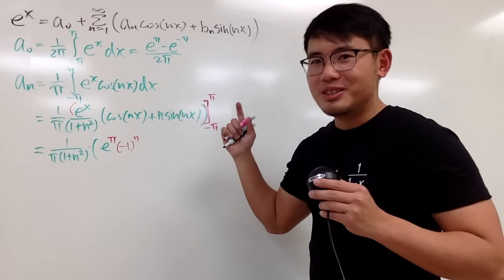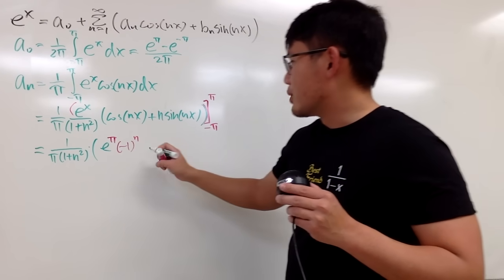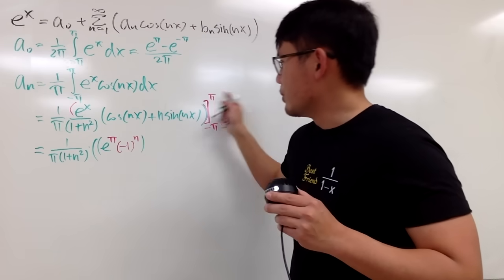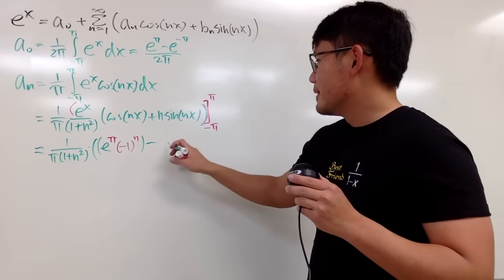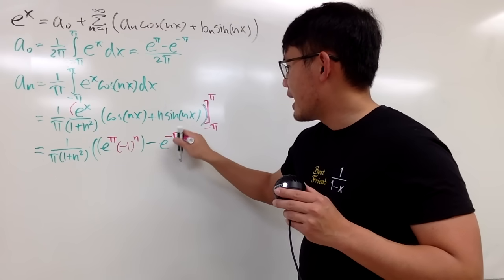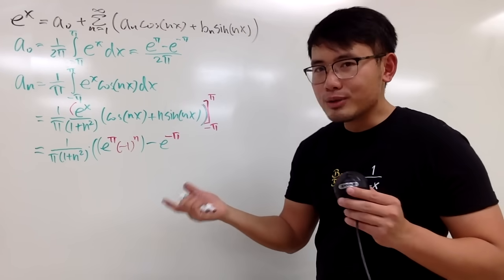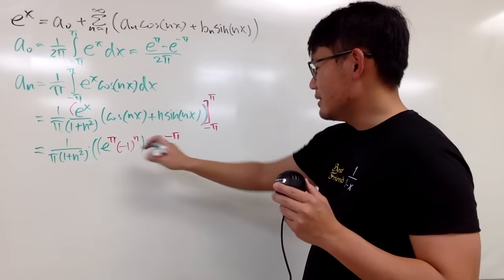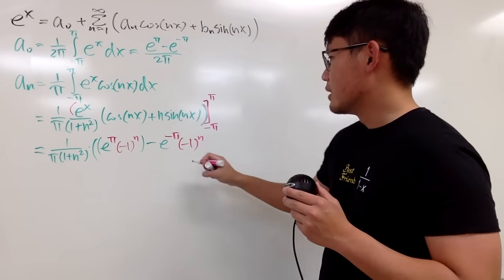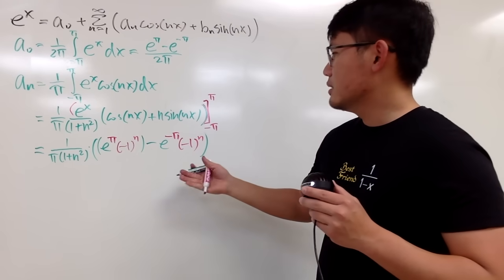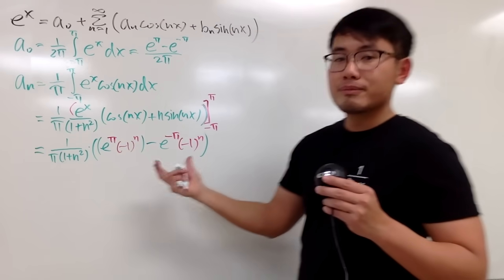So that part gives (−1)^n. Sine(nπ) is zero, so that term vanishes. Then subtracting the negative π evaluation: e to the negative π appears, and cosine(−nπ) also equals (−1)^n, and sine(−nπ) is still zero. So we get our final expression for aₙ.